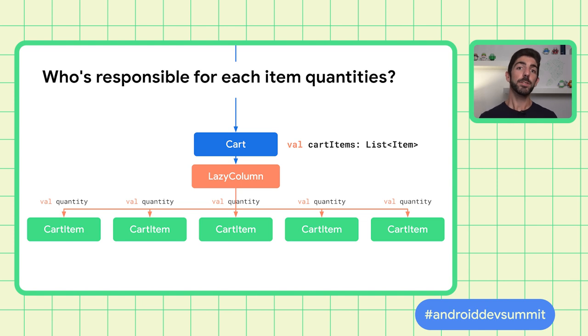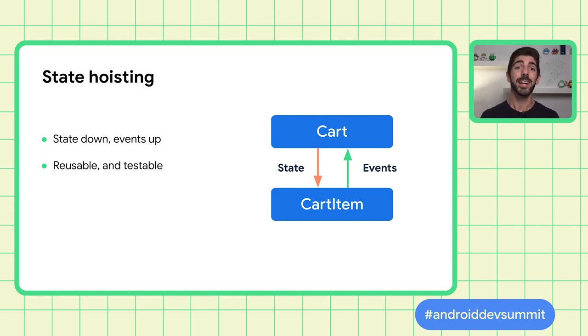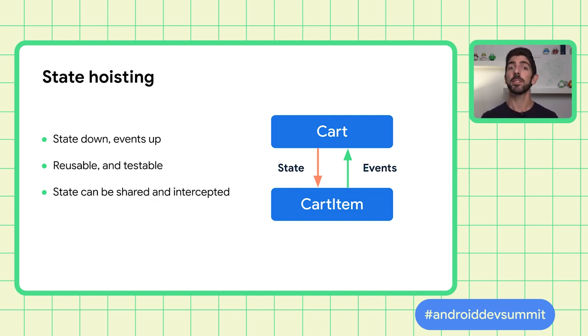The process we followed to make CartItem reusable is called State Hoisting. We hoisted the quantity state from CartItem to Cart. State Hoisting is a pattern of moving private state out of a composable to make it less stateful, therefore more reusable. A stateless composable is one that doesn't hold any private state at all. Composables should receive state as parameters and communicate events up using lambdas, making them more reusable and testable. State hoisted this way can be shared and intercepted if needed, and it complies with the Single Source of Truth principle.